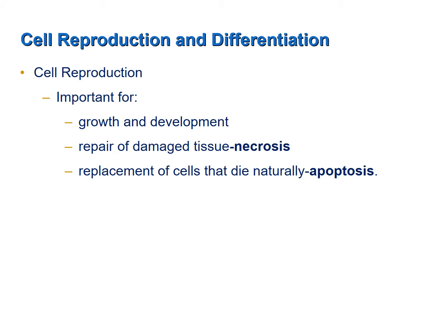Cell reproduction is important for several reasons. First, in order for growth and development to occur, body parts have to grow and change form, which requires the formation of new cells. Second, from time to time, cells and tissues are destroyed due to injury, trauma, toxins, or some factor that causes cells to die an unnatural death, which is known as necrosis. In order for the repair of damaged tissue to occur, new cells have to be formed to replace those that were destroyed.